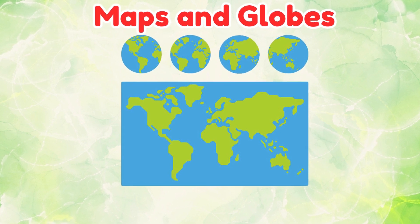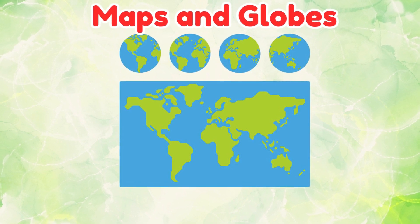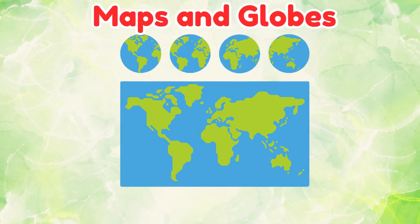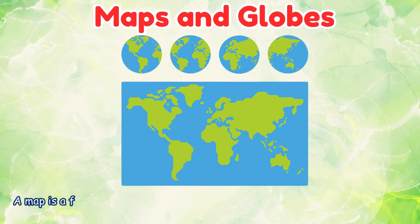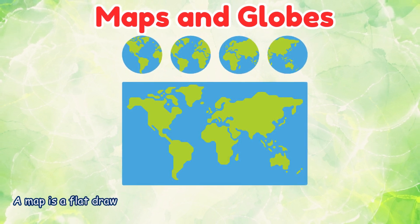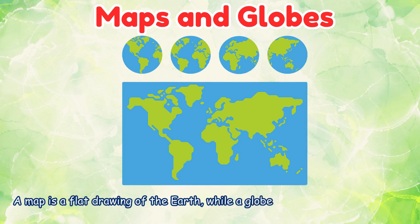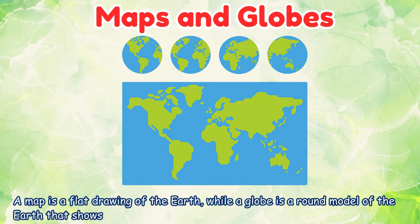Maps and Globes. A map is a flat drawing of the Earth, while a globe is a round model of the Earth that shows how the Earth really looks.